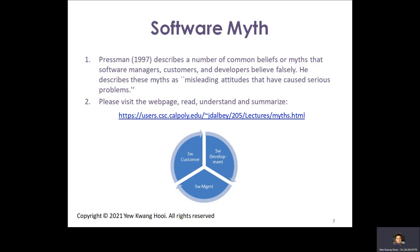Next, we talk about misconceptions in software development. There are many misconceptions because people liken software engineering to conventional engineering such as civil engineering — it is similar in many ways, but also different. According to Pressman, software myths are a number of common beliefs that software managers, customers, and developers believe falsely. There are three categories of myths: by manager, by customer, and by developer. Having the wrong belief is harmful because it may cause incorrect activities, actions, and processes. There are a dozen or more of these myths, which you can read at the provided URL.